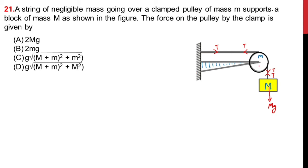Now one more force is acting there — that is the weight of the pulley. Weight of the pulley is also acting vertically downward. So this much force is acting on the clamp. Let's see which forces are acting on the clamp: there is a tension acting towards the left, and forces acting downward — we can say there is a weight due to capital M and due to small m.